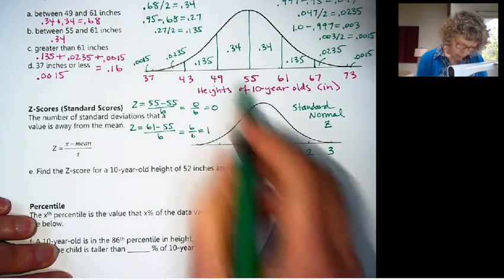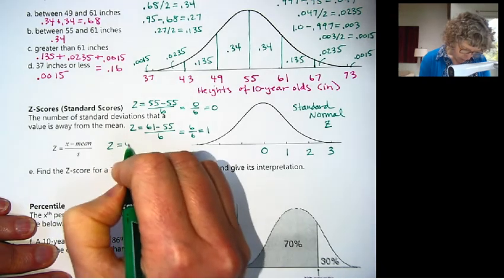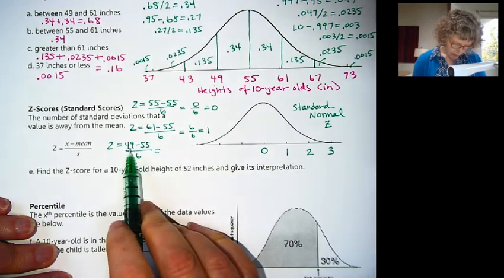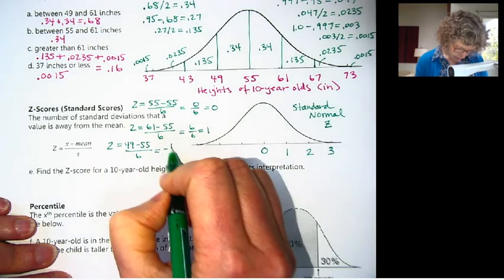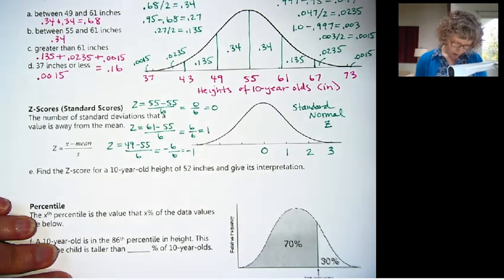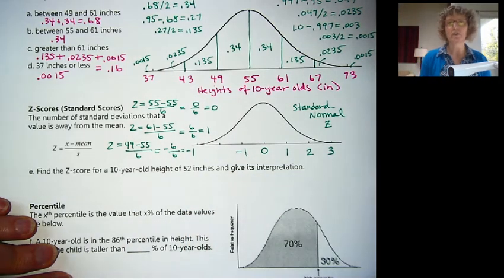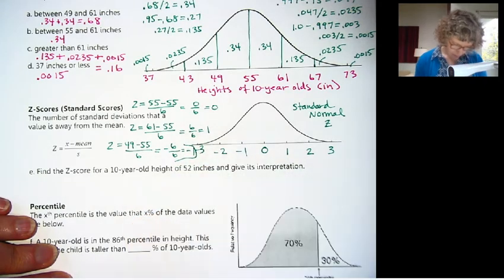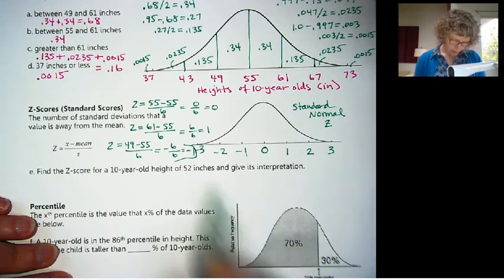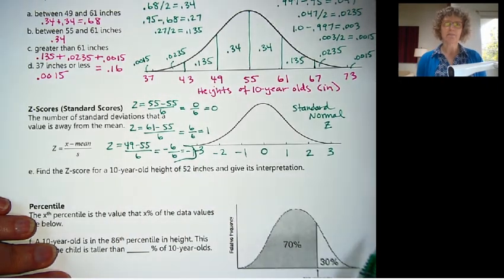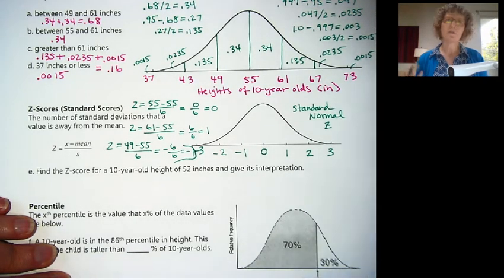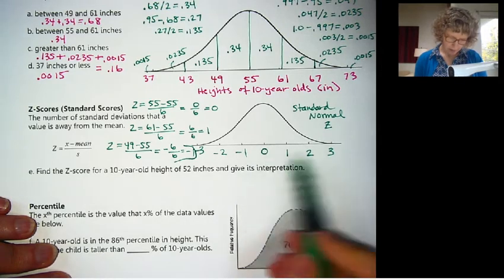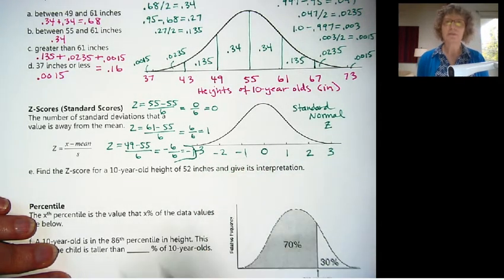Okay, so a 67 would come out to be two standard deviations above the mean. It would be 67 minus 55, so that's 12 divided by 6 is 2. And 73, the z-score will be 3 because it's 3 standard deviations above the mean. Cool, huh? That's the way the z-score is set up, to always make this come out to 0, 1, 2, 3. What about on the left side?